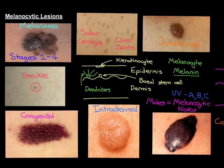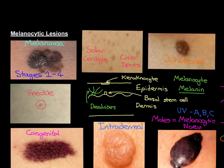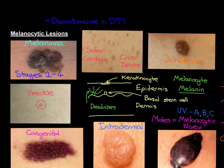Once you get to stage 4 and you have distal metastases — potentially in the brain, the lungs, the liver, and the bone — then it becomes very, very difficult to cure, and it's very rare that you can cure it. The treatment is then with systemic chemotherapy, and the classical agent used is a drug called Dacarbazine, also often referred to as DTIC. This is a classical chemotherapeutic agent.